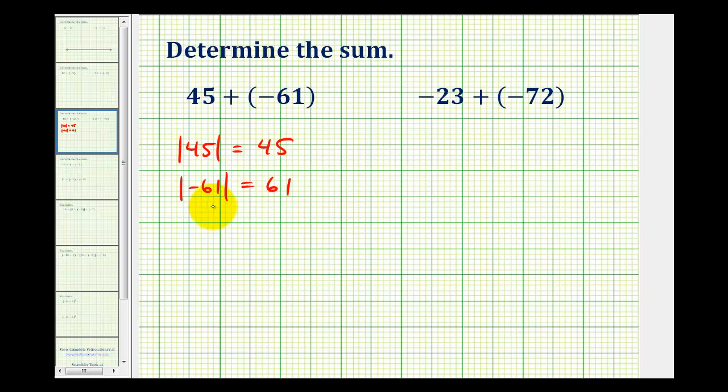Now we'll subtract the smaller from the larger, so we'll have 61 minus 45, which is equal to 16. Because negative 61 had the larger absolute value, the sum is actually going to be negative 16.